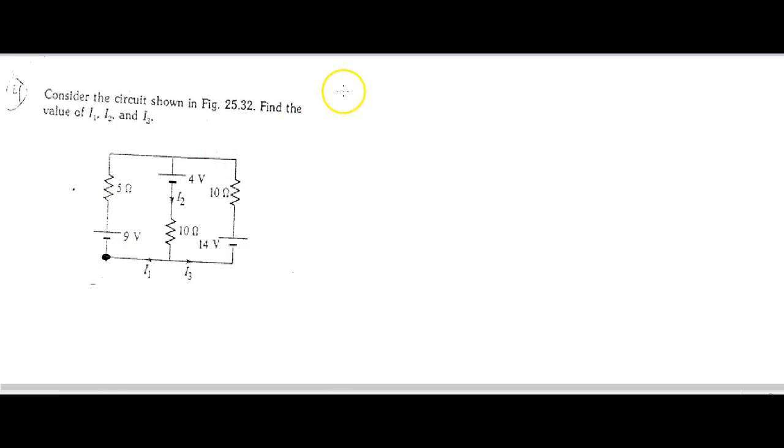I'm going to go up. I got 0 equals 9 volts minus I1, because I1 would be going through that resistor as well. I1 times 5 minus 4. Why minus 4? Because it's a positive plate to a negative plate. I lose potential doing that.